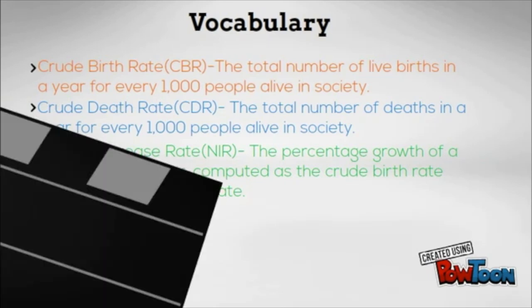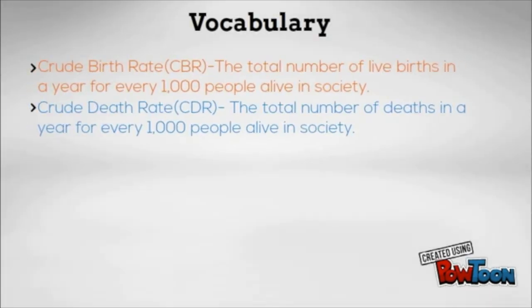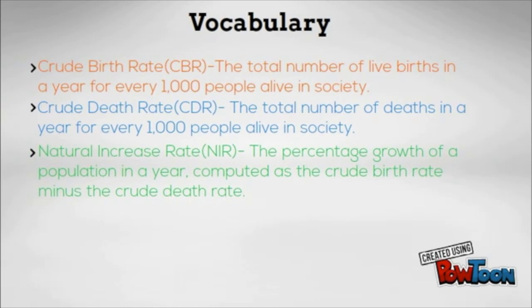The second is crude death rate, also known as CDR. This is the total number of deaths in a year for every 1,000 people alive in the society. This is comparable to the crude birth rate. The crude death rate is expressed as the annual number of deaths per 1,000 population.